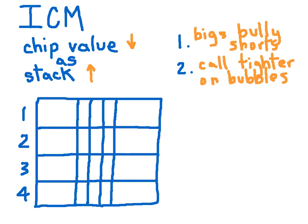Alright, so ICM means your chip values are worth less and less, each marginal chip is worth less and less as your stack grows, you should bully short stacks when you're fortunate enough to be a big stack around bubbles, and you should call tighter on bubbles regardless of your chip stack. So let's prove that out though, that sounds a little far-fetched, let's look at an example.